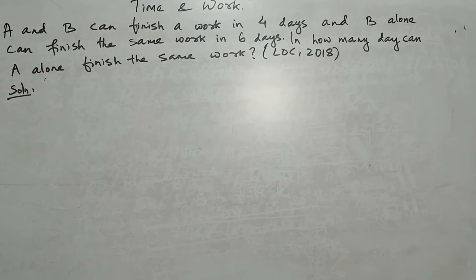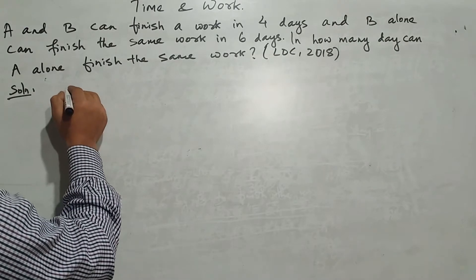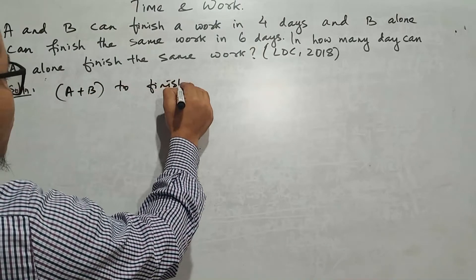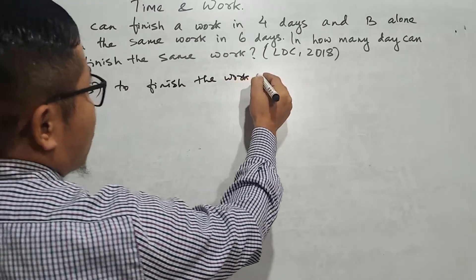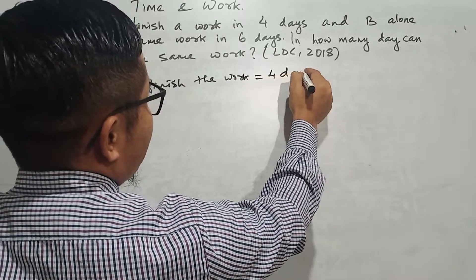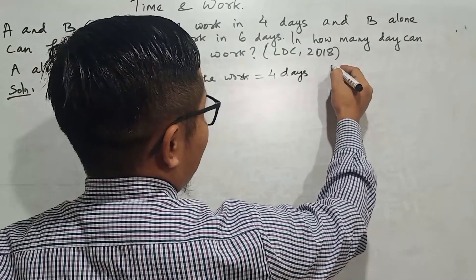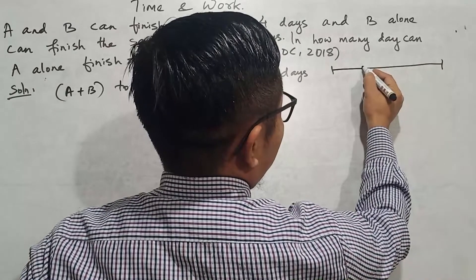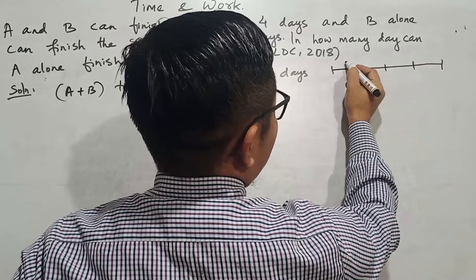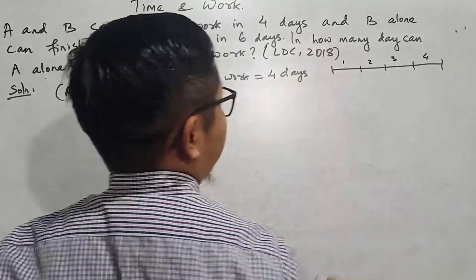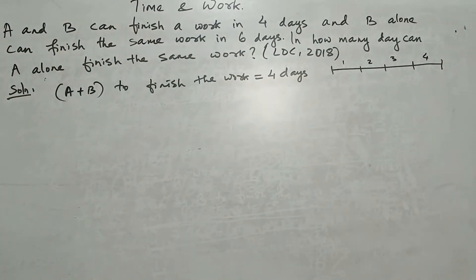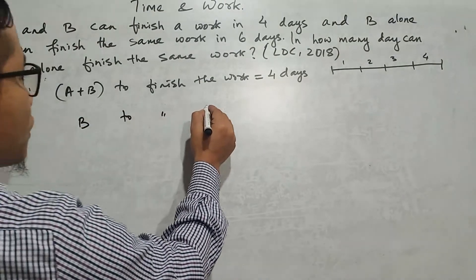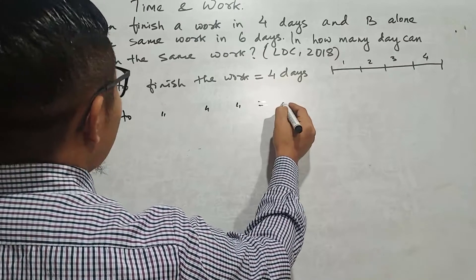A and B together can finish a piece of work in four days, so A plus B together finish the work in four days. A alone can finish the same work in six days, so A alone takes six days to finish the work.